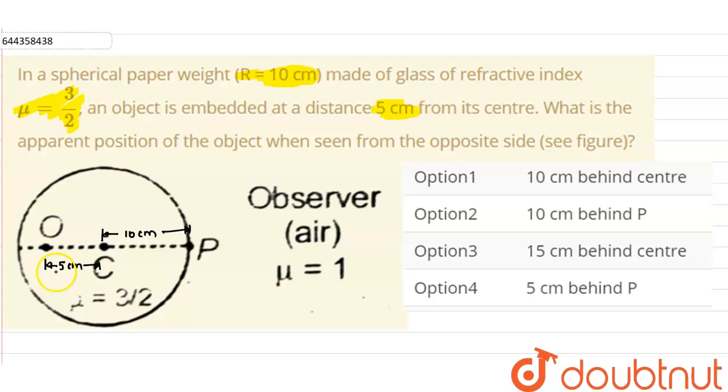We have to find the apparent position of the object when it is seen from the opposite side from P.